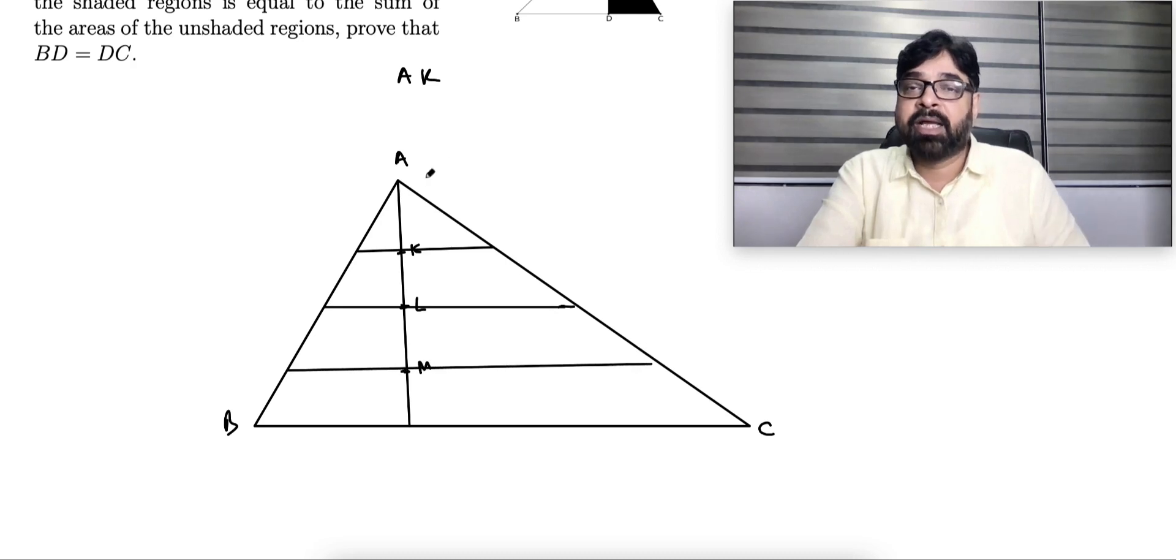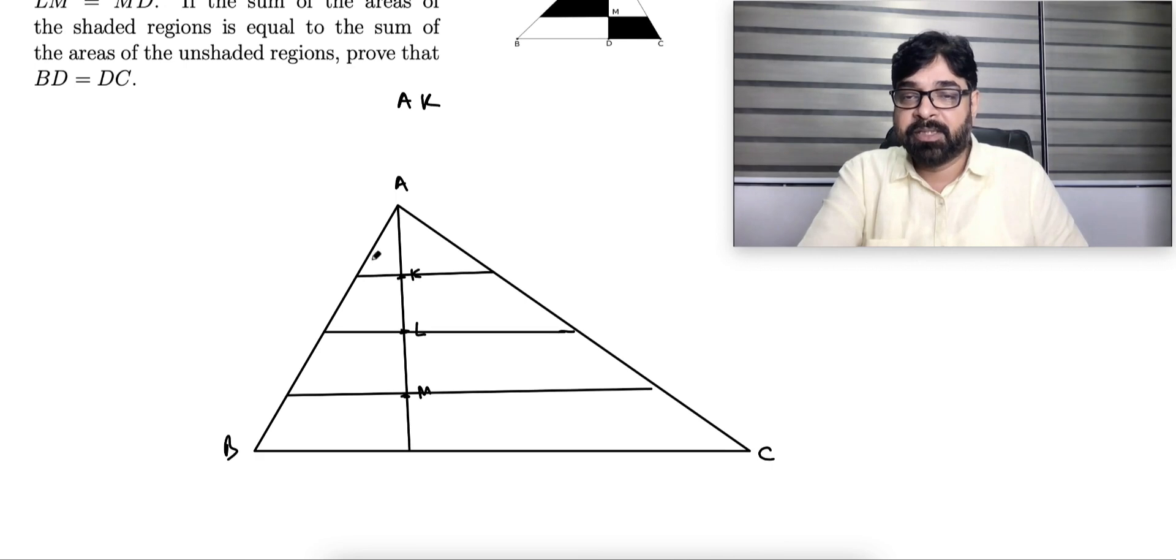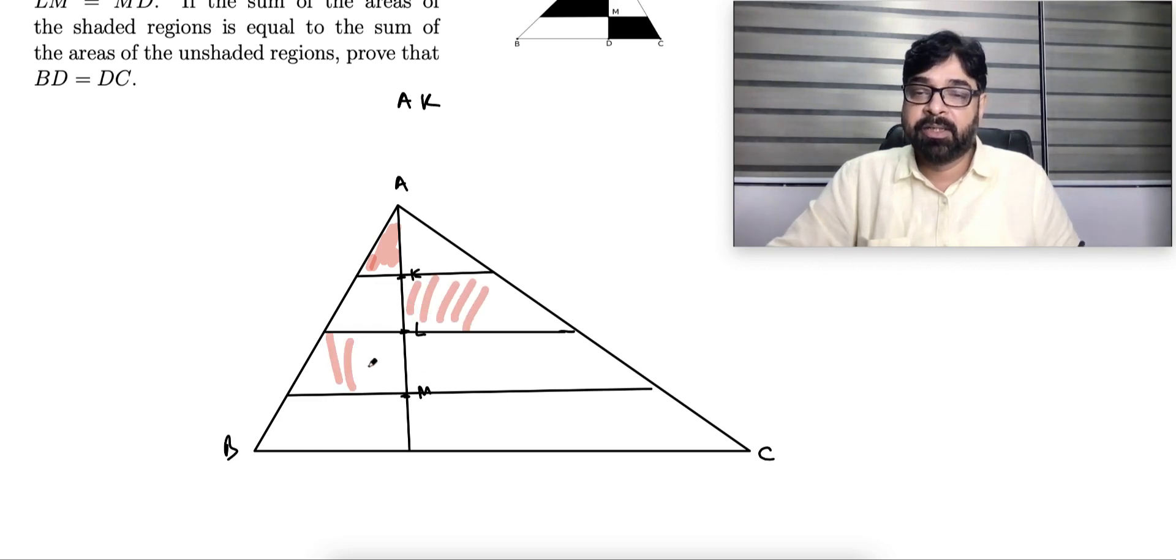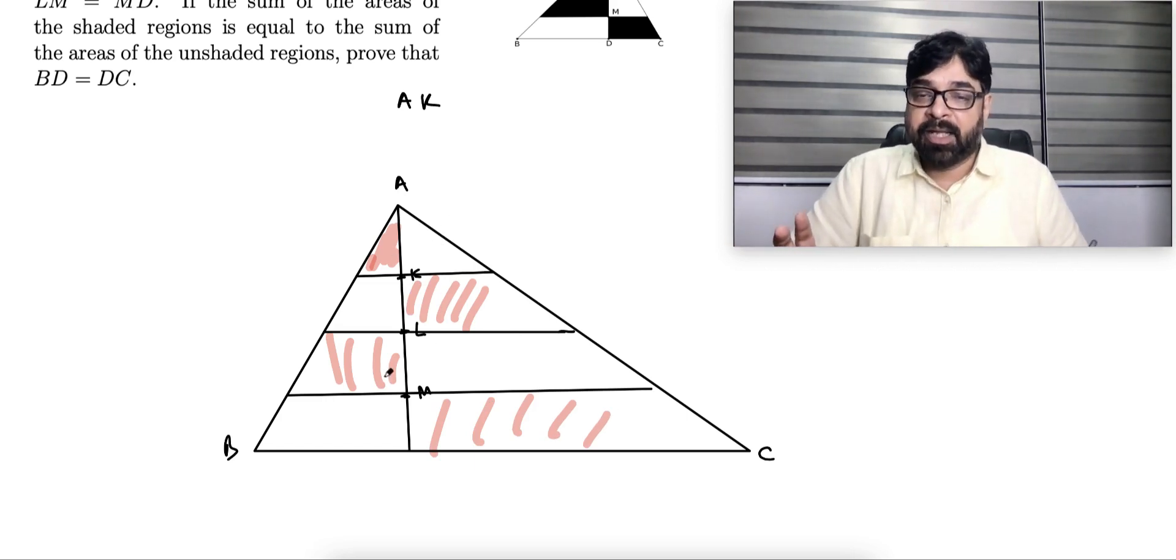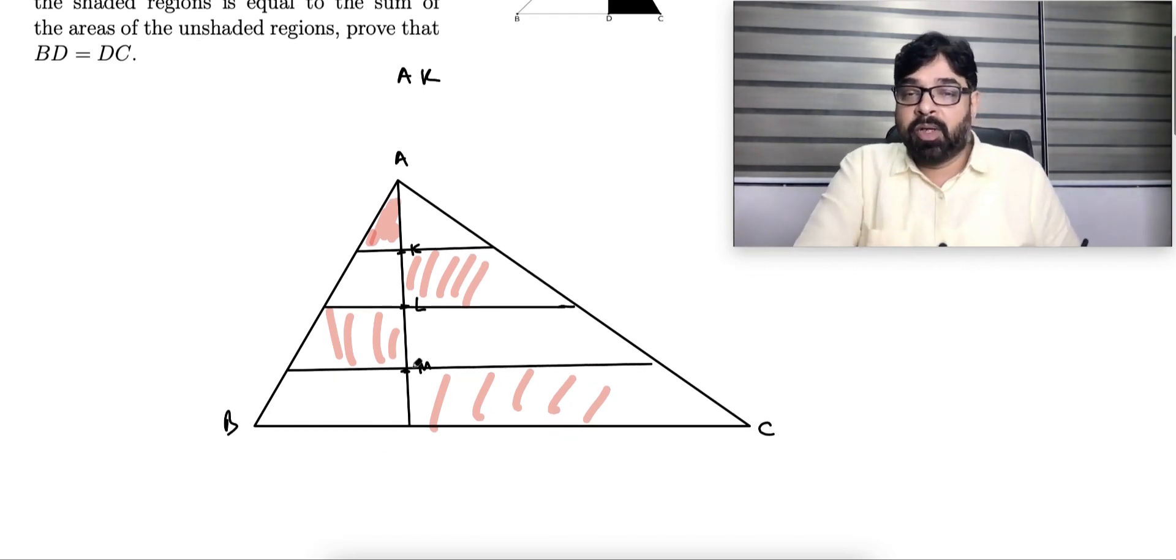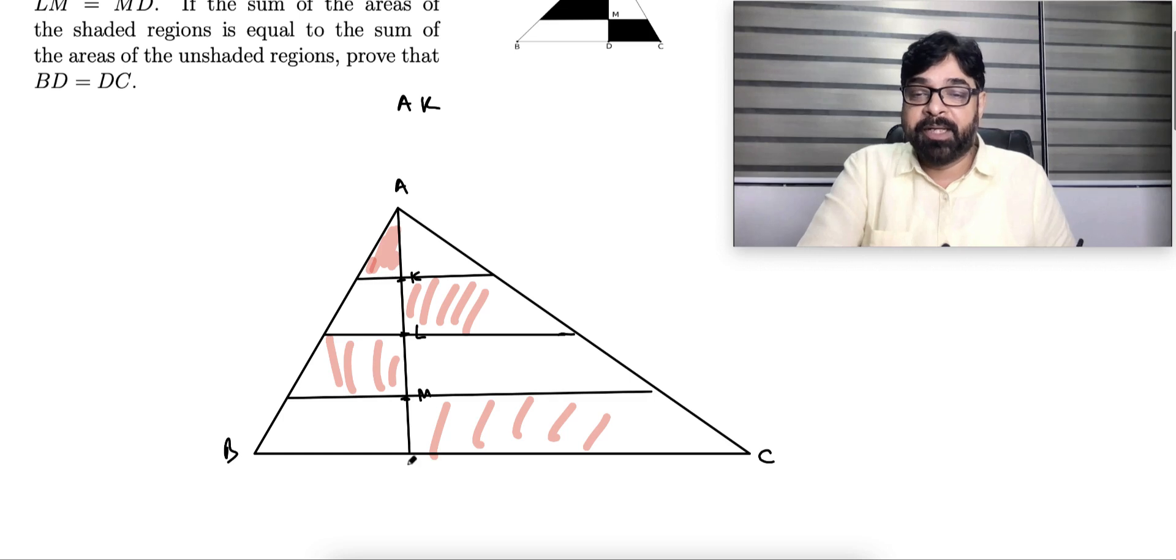One side is shaded, meaning this triangle and this side, then this side, then this side, and then this side. They are saying that if the sum of these shaded areas equals the sum of the non-shaded areas, this is a simple question. Prove that BD equal to DC.